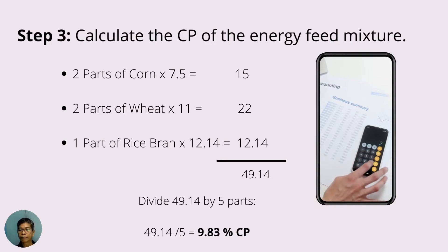Get the sum of all the products, which will give us 49.14. But since there are five parts in the mixture, divide the sum by 5. So 49.14 divided by 5, this will give you the CP content of the mixture, which is 9.83%.